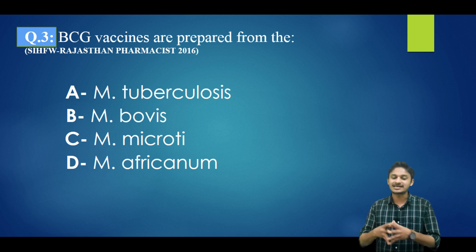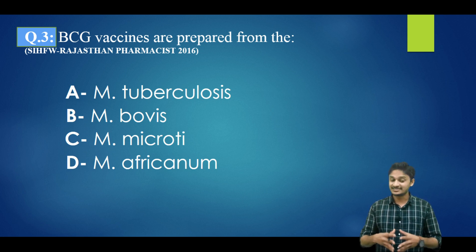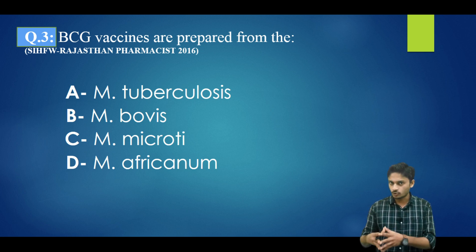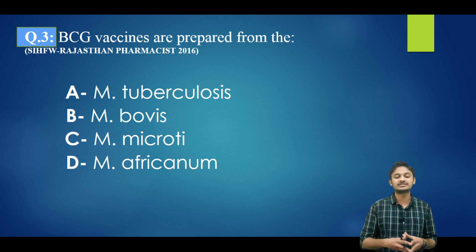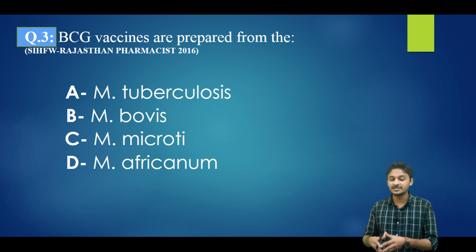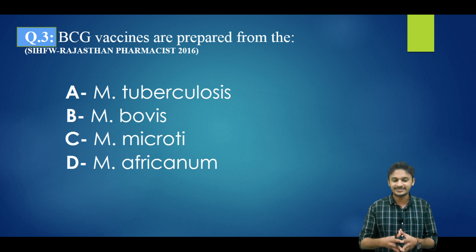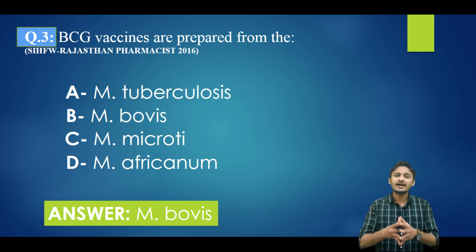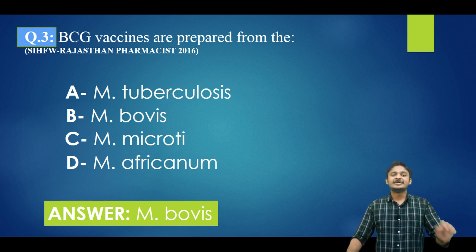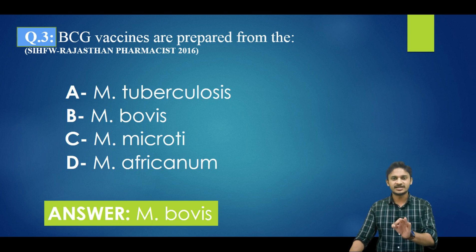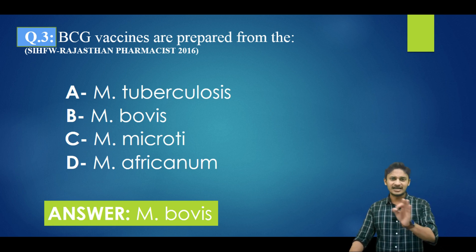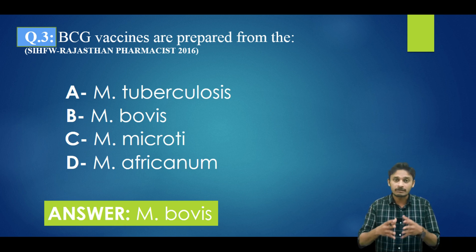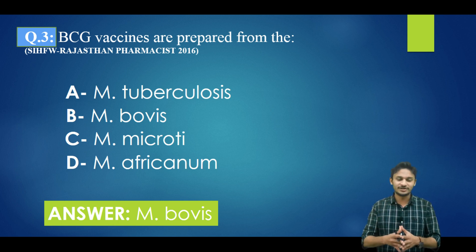Question number three: BCG vaccines are prepared from — options are: Mycobacterium tuberculosis, Mycobacterium bovis, Mycobacterium leprae, Mycobacterium africanum. The correct answer is option B — Mycobacterium bovis. One important point regarding BCG vaccine: it is an example of a live attenuated bacterial vaccine.